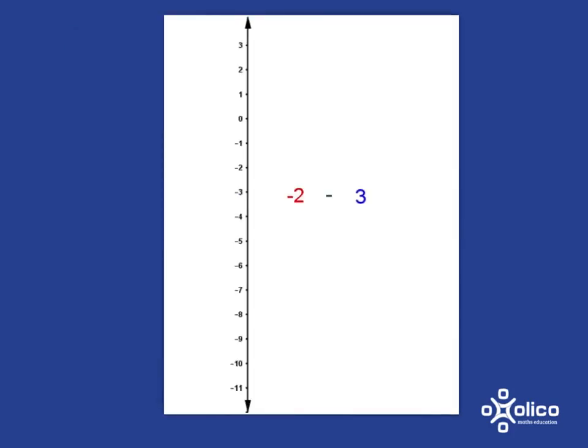What about negative 2 subtract 3? Well, we'll start at negative 2, and we've got to go down 3 steps. That will end us at negative 5. So negative 2 subtract 3 gives us negative 5.